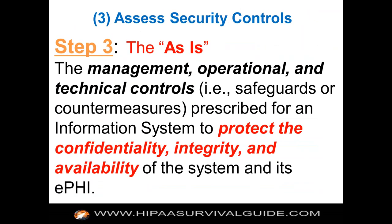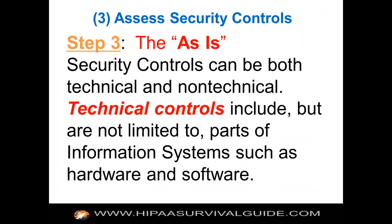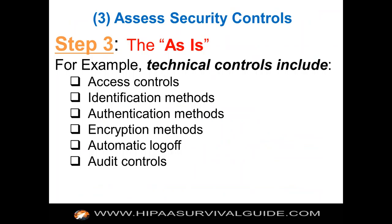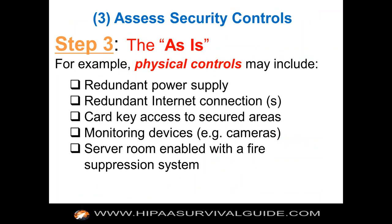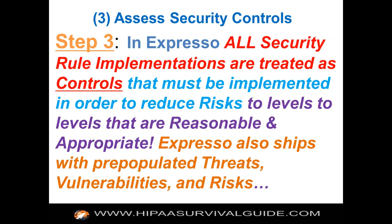The ask that is not so daunting is figuring out what you have in place right now. Look at your technical controls — access controls, authentication, encryption — and plug those in. In Espresso, all security rule implementation specifications are treated as controls. That was the big aha moment for us, and it's what totally differentiates us from our competitors: we recognize that those implementation specifications in the Security Rule are nothing more than controls you have to implement. We also borrowed some controls from the Cybersecurity Council.